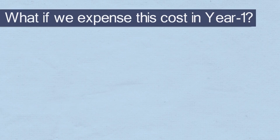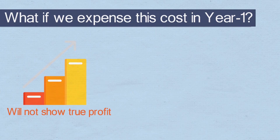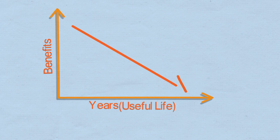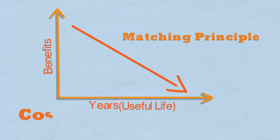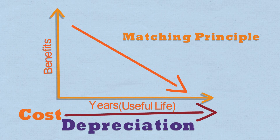What if we expense this cost in year 1? It will not show a true picture of the profit. Why? Because the benefits are spread across a certain period, i.e., the useful life. Therefore, as per the matching principle, the cost of fixed assets should be allocated over the useful life. This expense is what we call depreciation. Let's see some examples of assets that should be depreciated.